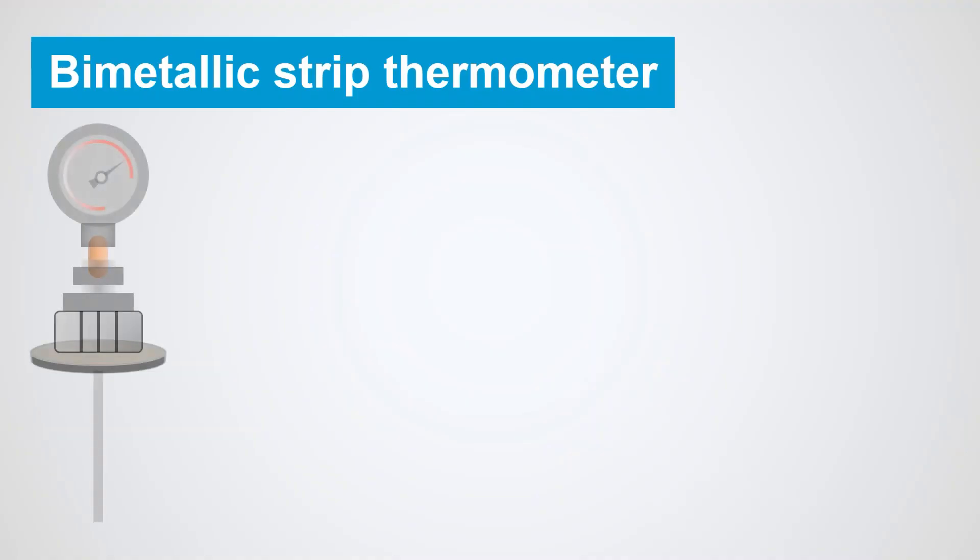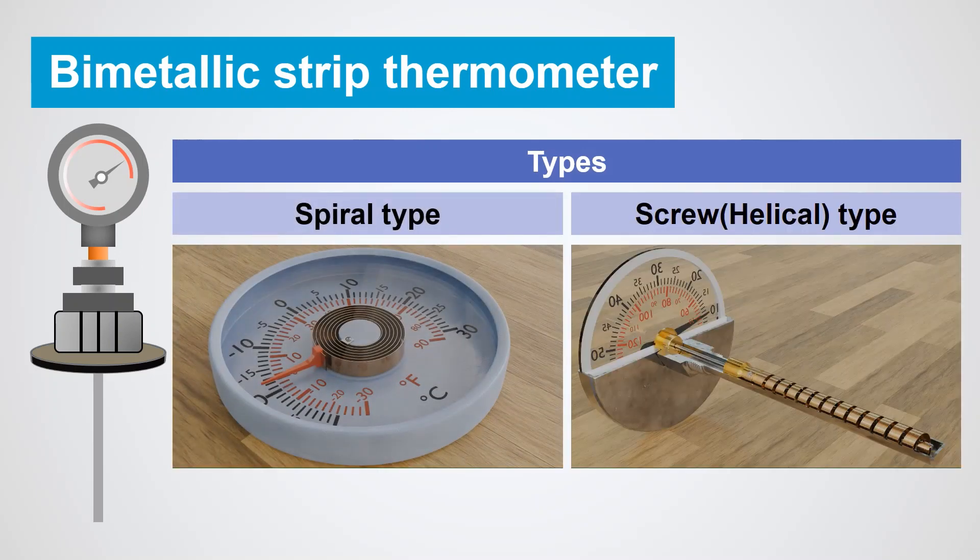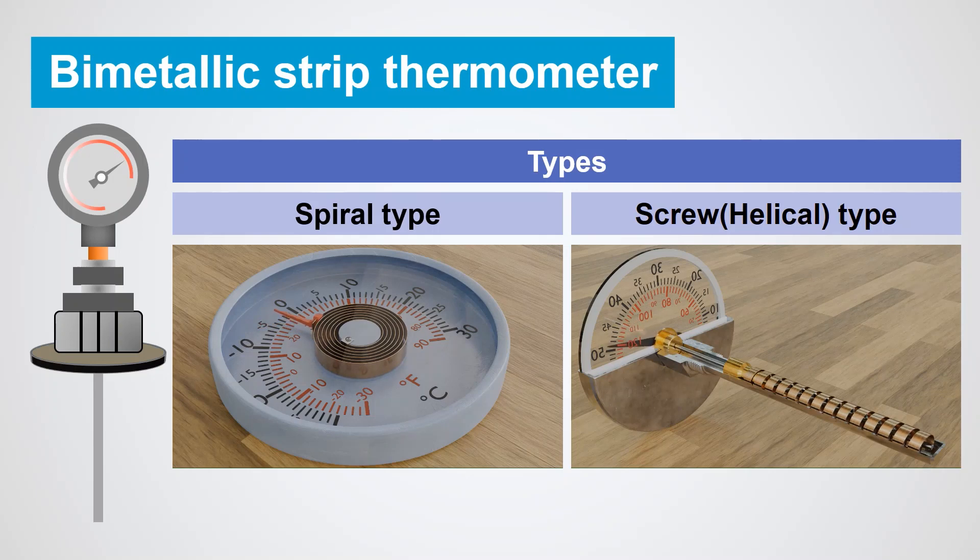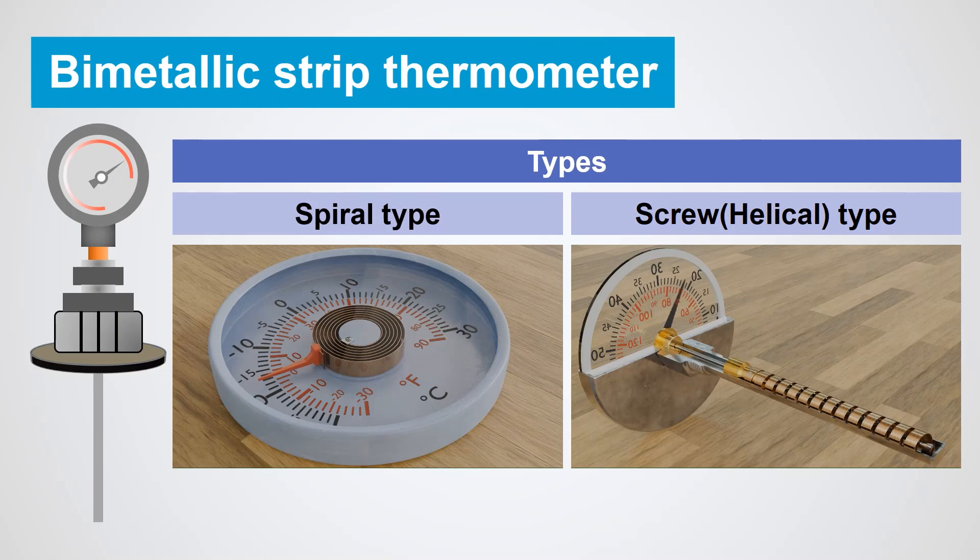The longer the bimetal, the greater the bend and thus the sensitivity for temperature measurement. For this reason, a long bimetallic strip is often wrapped into a coil. Depending on whether the bimetallic coil is twisted like a spiral or a screw helix, two different types can be distinguished.